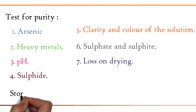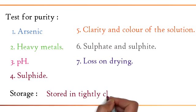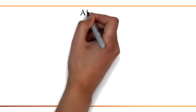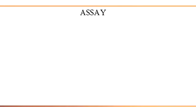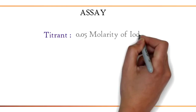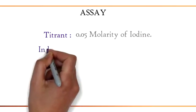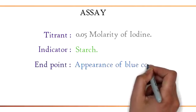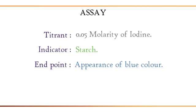Next is storage. To be stored in tightly closed, airtight container. Now, moving on to the assay. Titrant used is 0.05 molarity of iodine. Indicator used is starch. Endpoint is appearance of blue color.